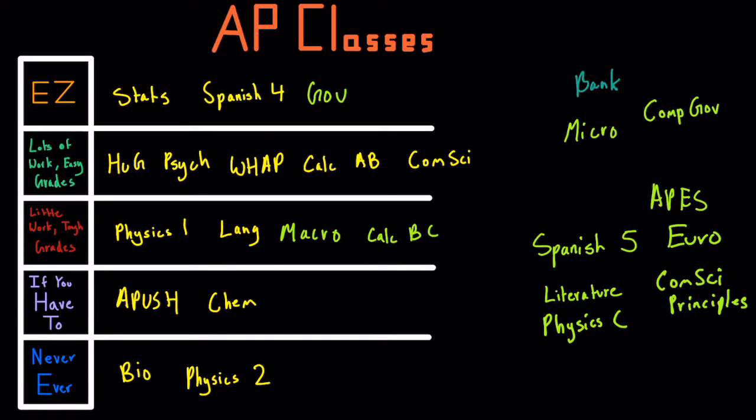Now AP Literature is a class that I would say is lots of work, easy grades. Personally, it all depends on the teacher. English is always depending on the teacher. But all in all, there's not an excessive amount of writing. We read Frankenstein, we read The Death of a Salesman. That kind of book is much more interesting than the things we've been reading in the past, so it holds interest. It is a lot of work because it's a lot of reading, but getting good grades is quite easy, so it's rewarding all in all.